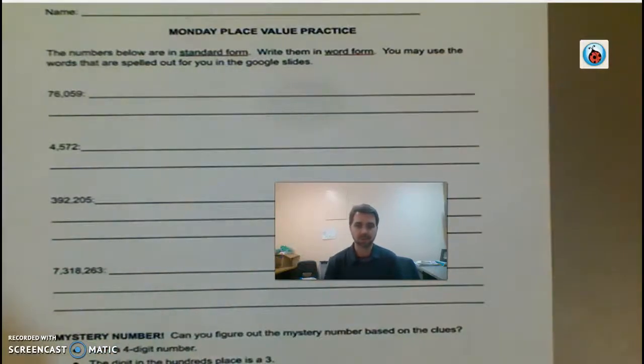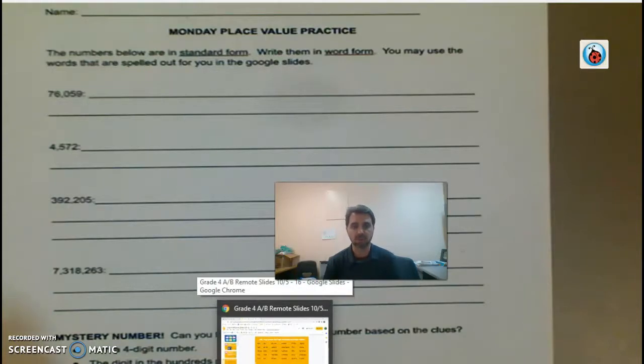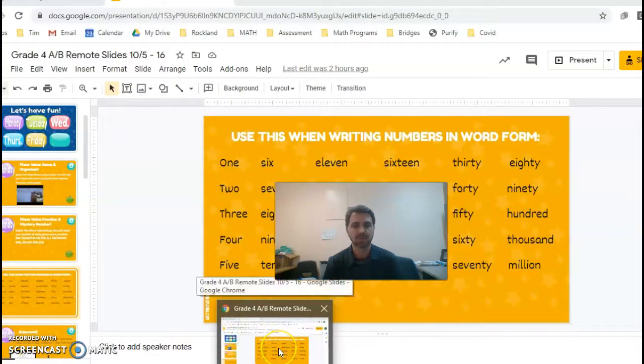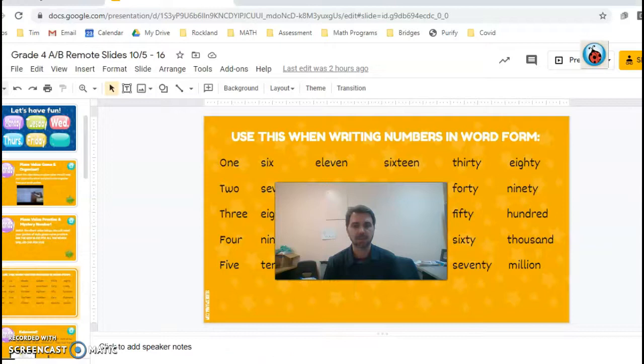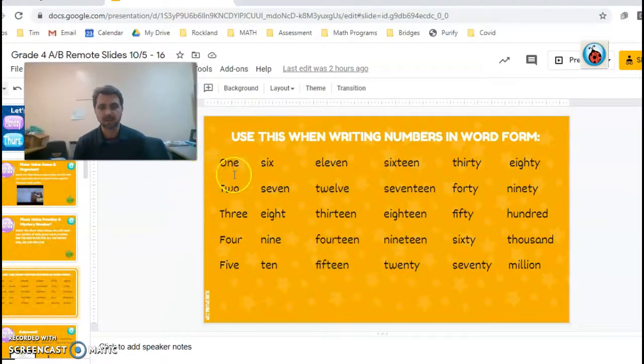And it says you may use the words that are spelled out for you in the Google Slides. So in your Google Slides, you might notice that on the next slide, after the one that you were on here, it looks like this. Okay, so you've got all the words that you might need, including the teen numbers, 20, 30, 40, 50, 60, 70, 80, 90, 100, 1000, million, 1 through 10, 11, 12. So that should be very helpful.